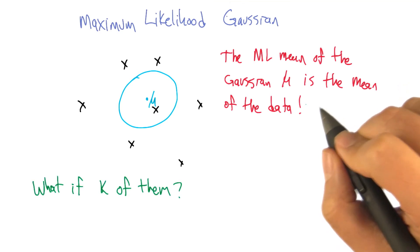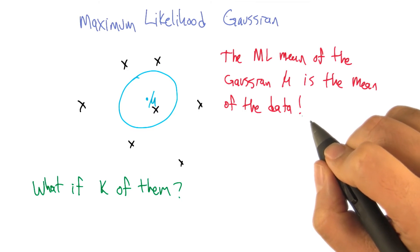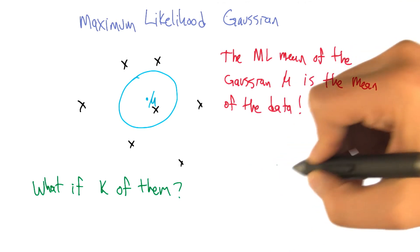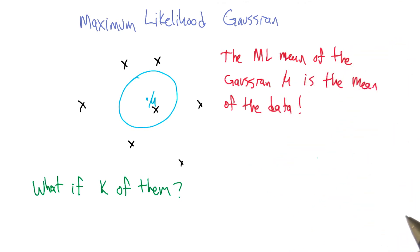So the tricky thing, of course, is what happens if there's K of them? How do we set the K different means? And our answer is going to be... there, I just wrote it. Do you see it? Nope. That's because it's hidden variables.